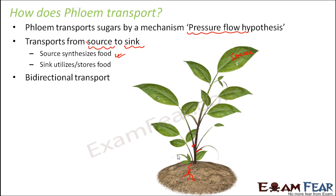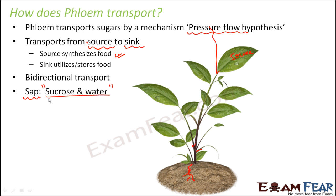This is a bi-directional transport because leaves are present everywhere and food needs to move both downward and upward. The food being transported is called sap, and sap is nothing but sucrose and water. Glucose produced by photosynthesis is a monosaccharide and is converted into the disaccharide sucrose, which when mixed with water forms the sap that is transported by phloem.